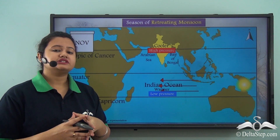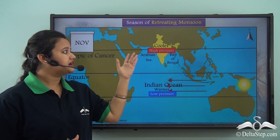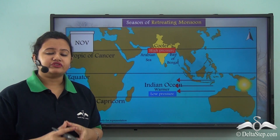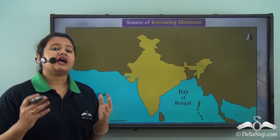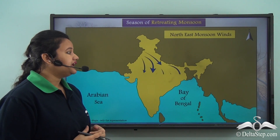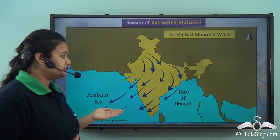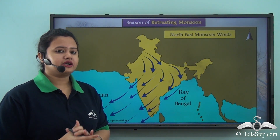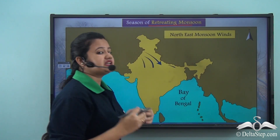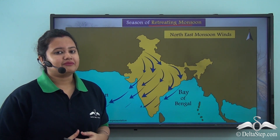As a result, direct rays fall on the Indian Ocean, raising its temperature and creating a low pressure zone over it. Conversely, the Indian landmass gets cooler and a high pressure zone develops over it. At this time the monsoon winds change direction, moving from northeast to southwest. They first exit the northern plains, then move over the southern peninsula and withdraw from the country. This season is called retreating monsoon because it is marked by the withdrawal of monsoon winds from the Indian landmass.